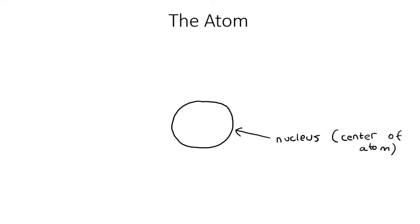Inside this nucleus, there are going to be two types of things. I'll draw them in red — let's put four of them. These red things are going to be called protons, and they are positive, so I'm going to put a little plus inside there.